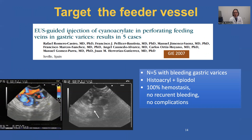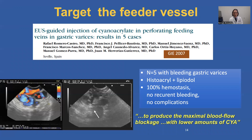Various strategies have been proposed. The Seville group targeted the perforating feeder vessel under EUS guidance — this is really the first application of using EUS to target the feeder vessel — with a very nice proof of concept showing obliteration of these varices with no further bleeding. The goal here is to reduce the amount of glue injected to reduce the risk of embolization.